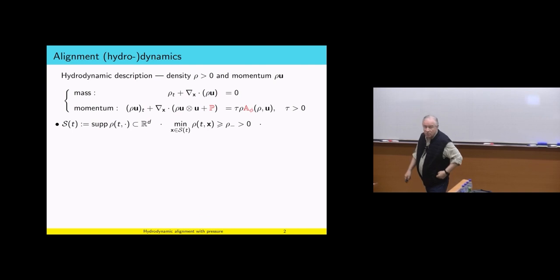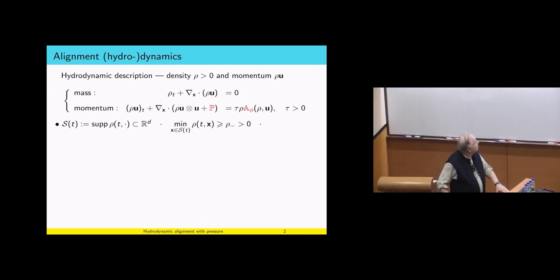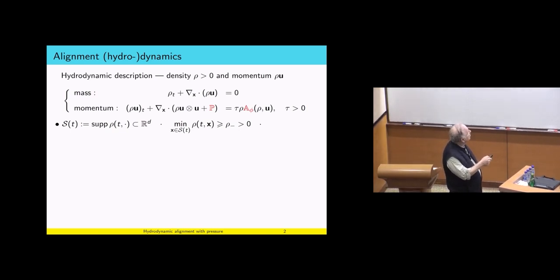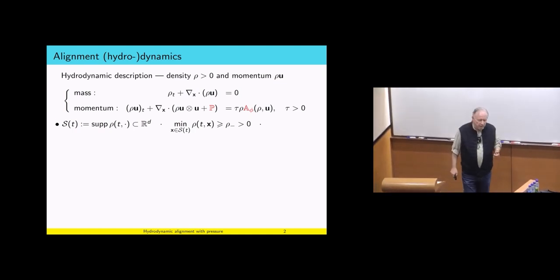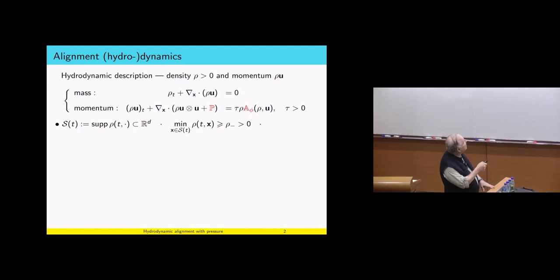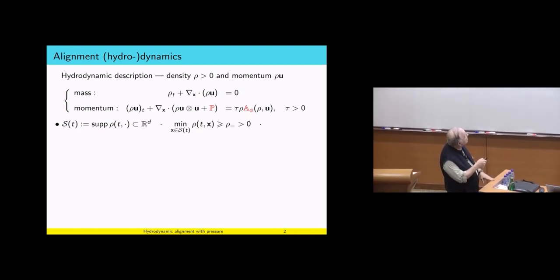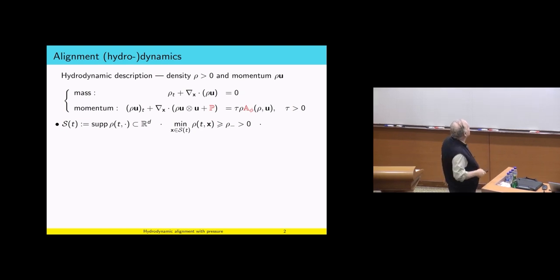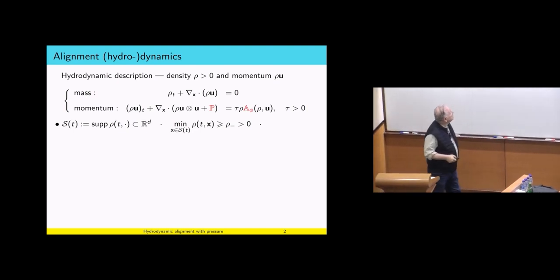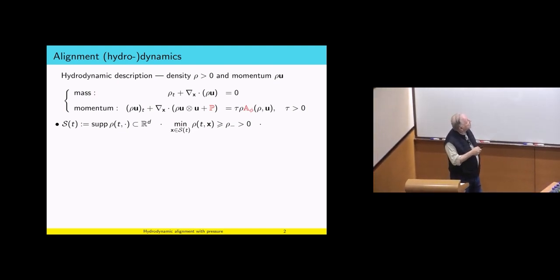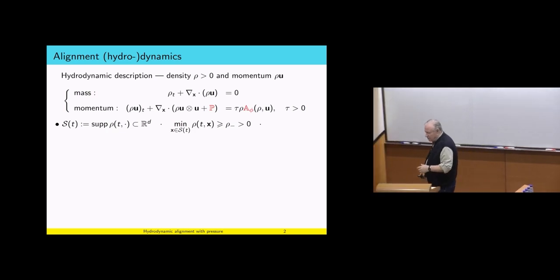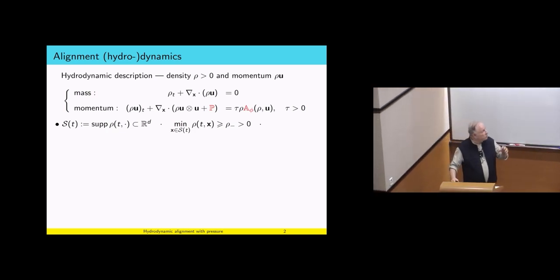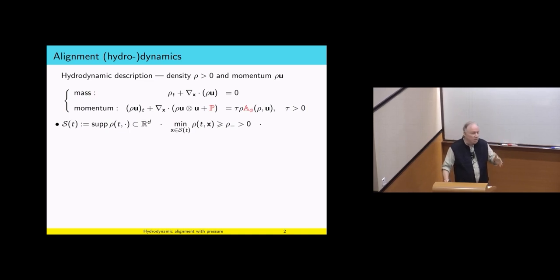This is the hydrodynamic description that we ended with yesterday. We have density, we have the momentum, and we really focus on the momentum here. There are two terms in red: one is the pressure, which I will derive again today, and there is the alignment term, which captures the main aspects of alignment dynamics. I will denote by S the support of the density and assume the density is bounded away from vacuum, so we have a blob of crowd that stays bounded away from zero in density. It's discontinuous at the boundary.